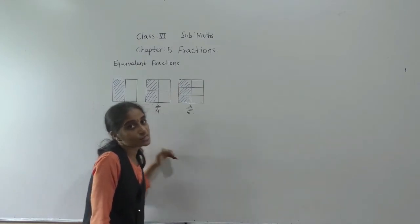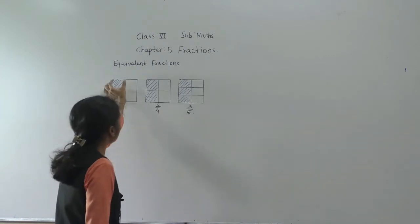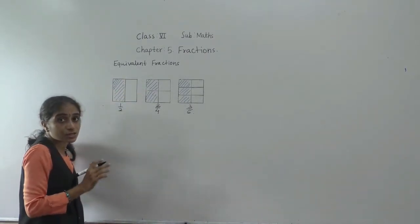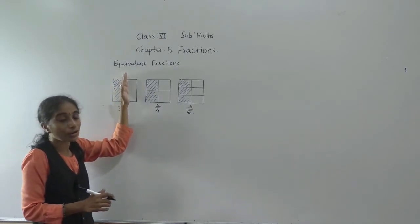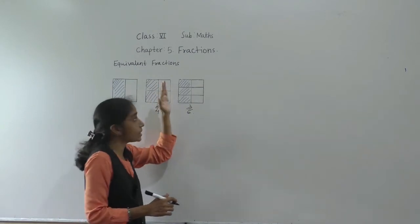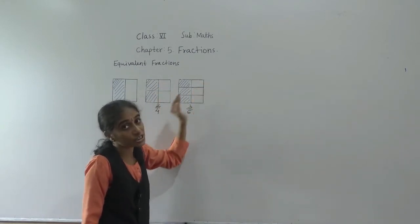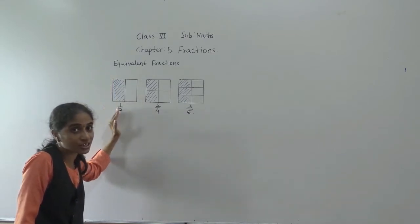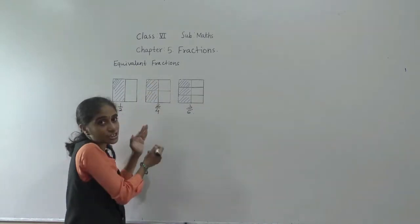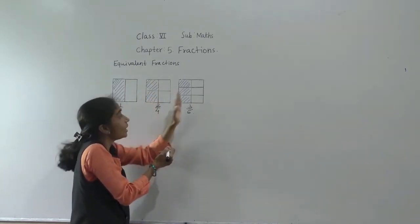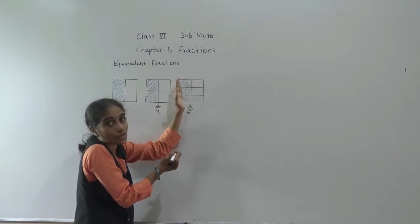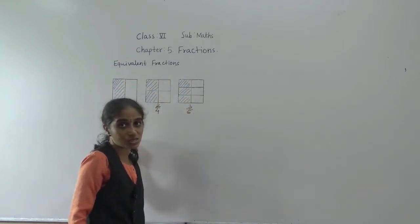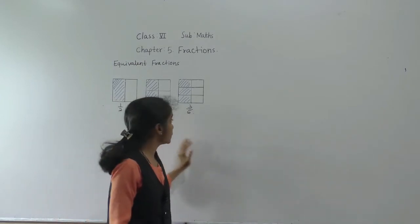Three out of six means half of the part is shaded. So all these fractions are equivalent fractions. If you observe properly, the same amount is shaded in each figure. What has changed? Only the number of parts is different — two equal parts, four equal parts, and six equal parts — but the shaded portion is the same: half in each case.